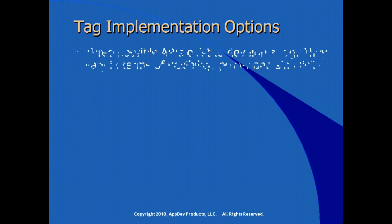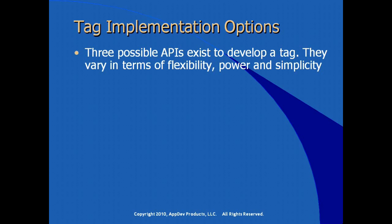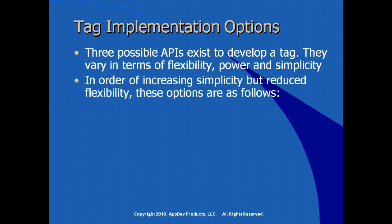If we're going to implement custom tags, what are the choices we have? There are three possible APIs to develop a custom tag. They vary in terms of flexibility, power, and simplicity. In order of increasing simplicity but reduced flexibility, the options for implementing custom tag logic are as follows.